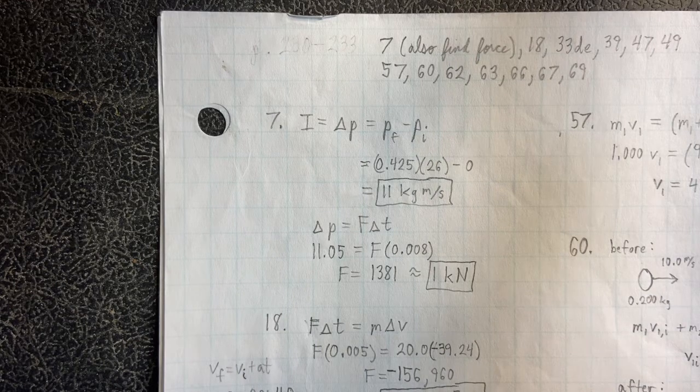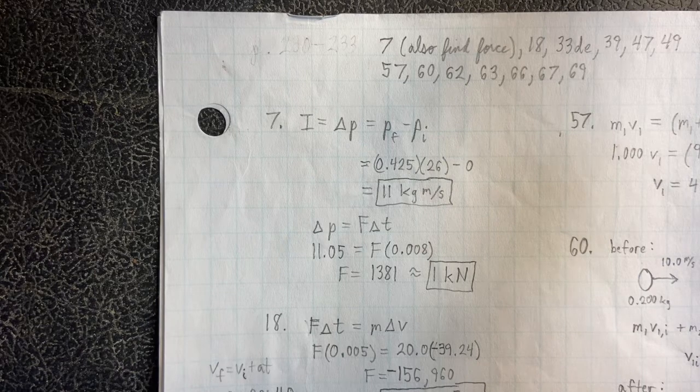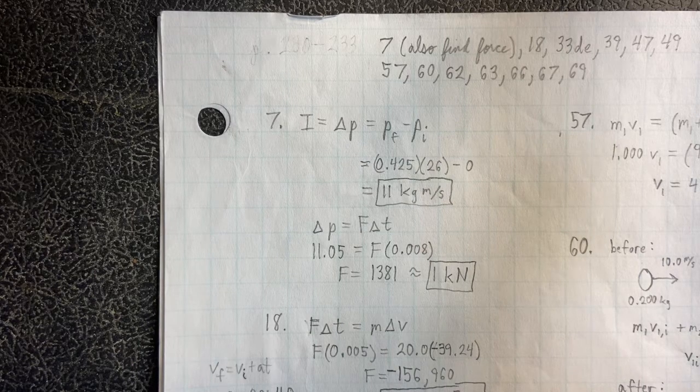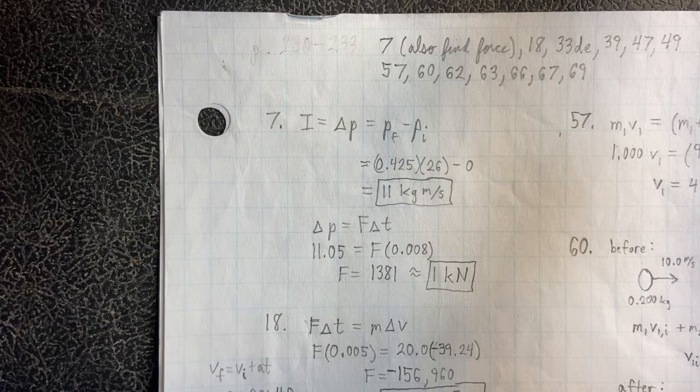Impulse is change in momentum. So I equals delta P, and delta is always final minus initial.